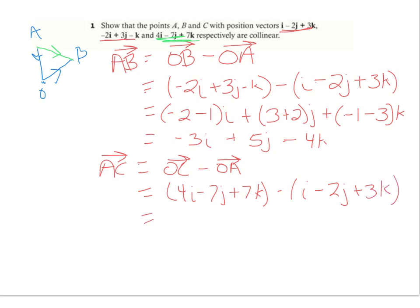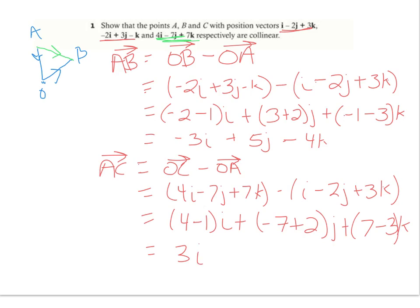When I combine these, I get all my I's together: 4 subtract 1 for I, plus a negative 7 subtracting a negative 2 gives plus 2 for J, and 7 subtract 3 for K. That gives me 3I minus 5J plus 4K.